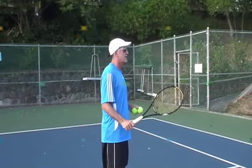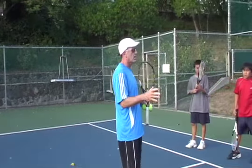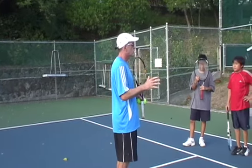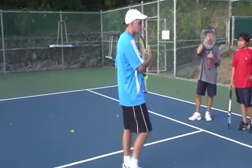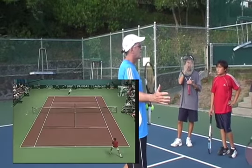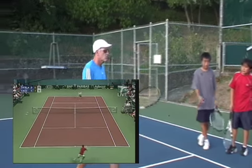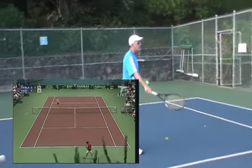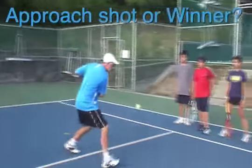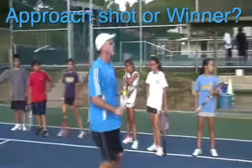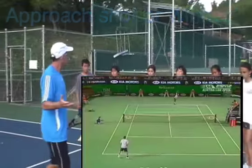We're going to go over the approach shot today. There are a couple of things we need to understand: when an approach shot is not an approach shot, and when an approach shot is a shot that you're transitioning to the net. That's what an approach shot is. Usually the approach shot is a short ball, dropping low towards the ground, and as you hit it you're moving forward for the next shot — the volley.